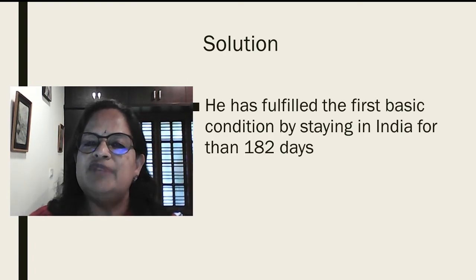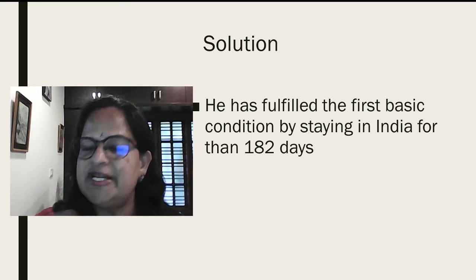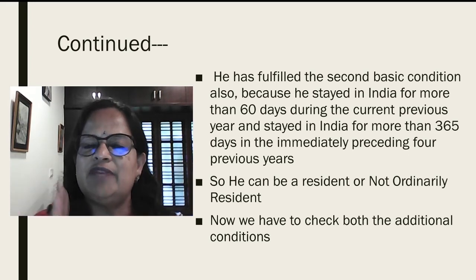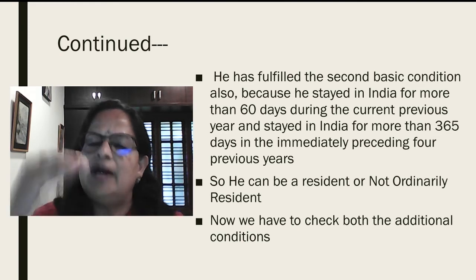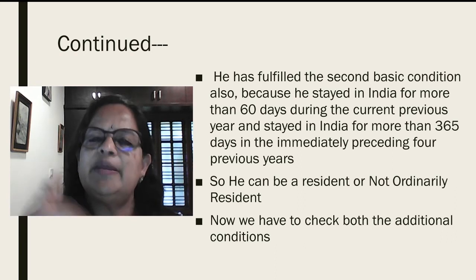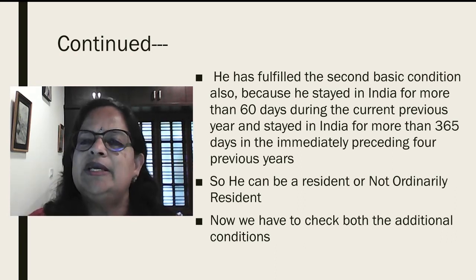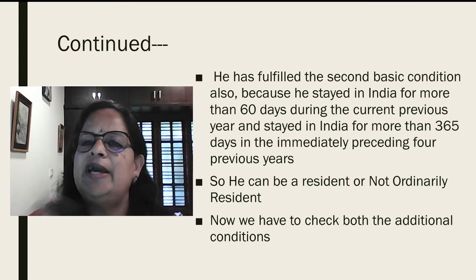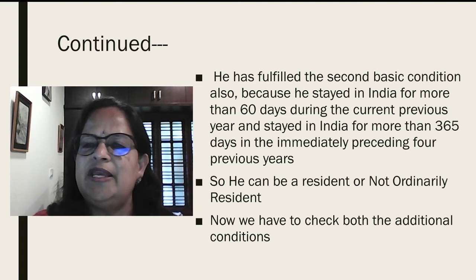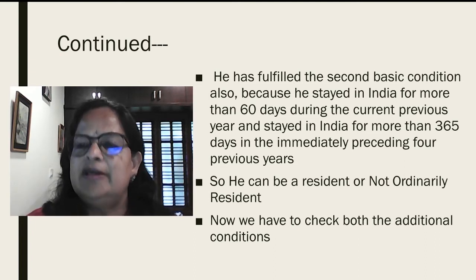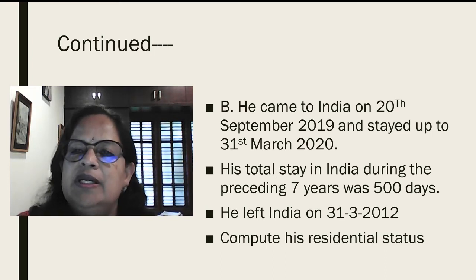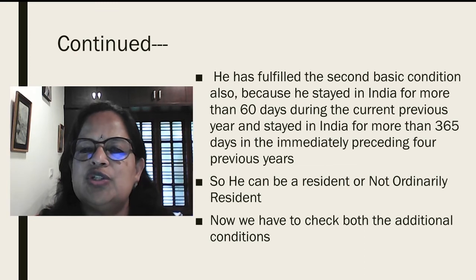Check the basic conditions. First basic condition: he should be in India for at least 182 days or more. His stay is 195 days, so he has fulfilled the first basic condition. The second basic condition — 60 days or more — is also satisfied. Additionally, his total stay during the preceding 7 years was 500 days, which exceeds 365 days, so the second basic condition is fulfilled.